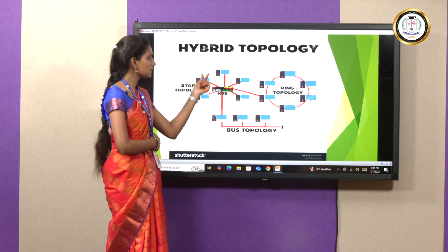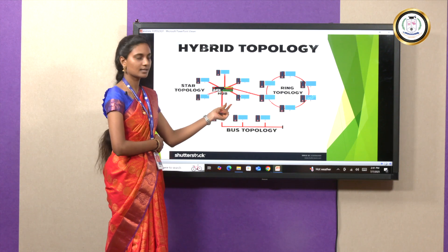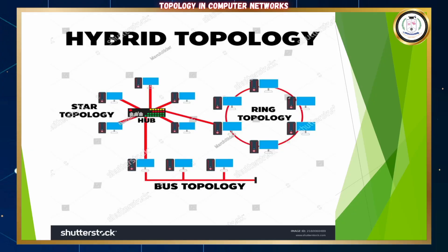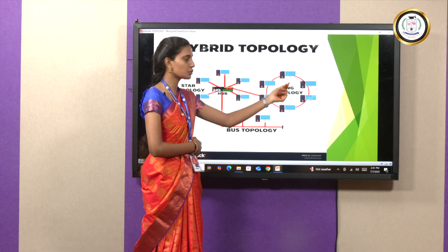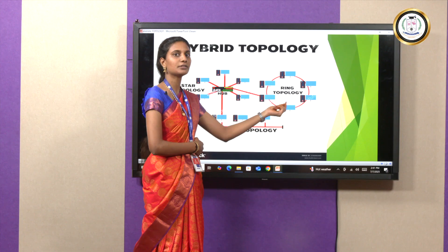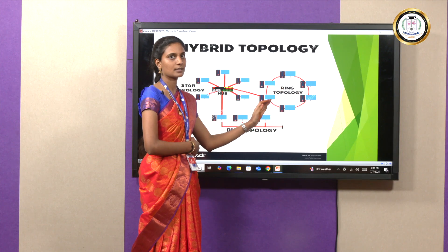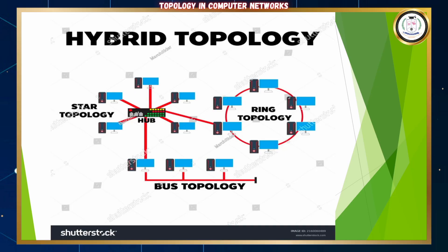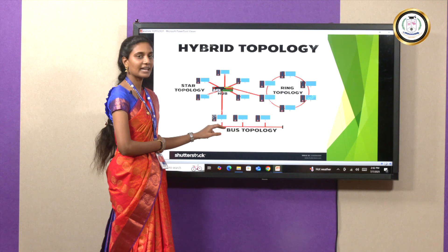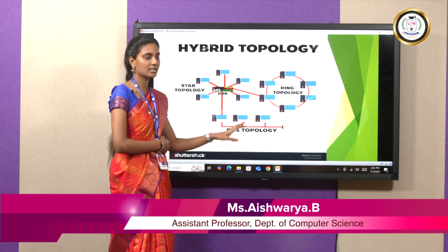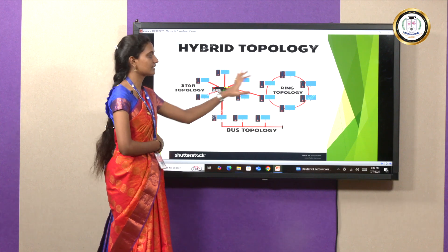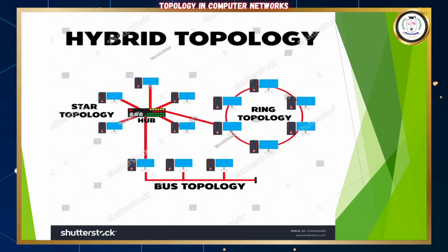In the hybrid topology diagram, the second topology used is ring topology — an endless loop where the first device sends the message to the second, which passes to the third, fourth, fifth, and the process repeats. The third topology used is bus topology, where a single line transfers data to all other devices. Together, these three topologies — star, ring, and bus — form the hybrid topology.